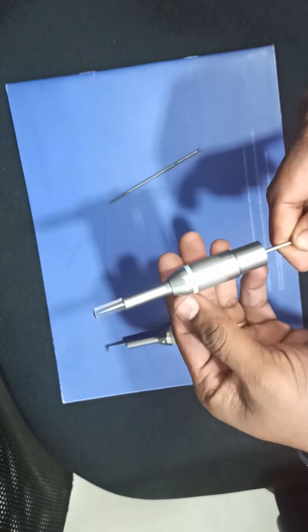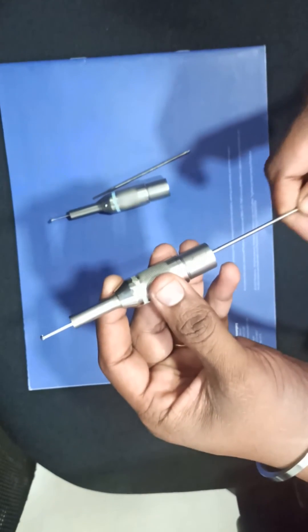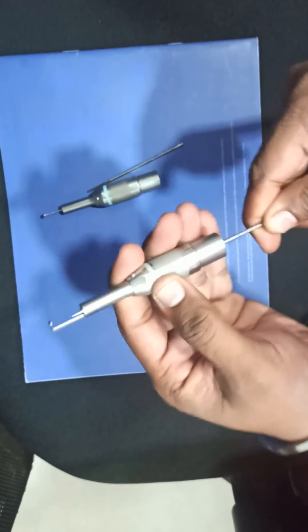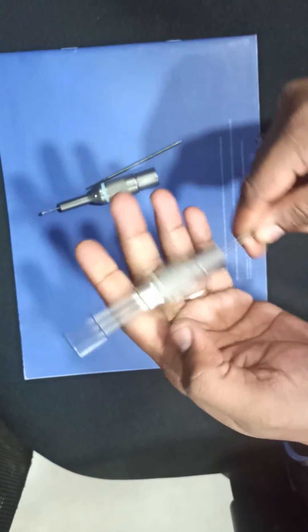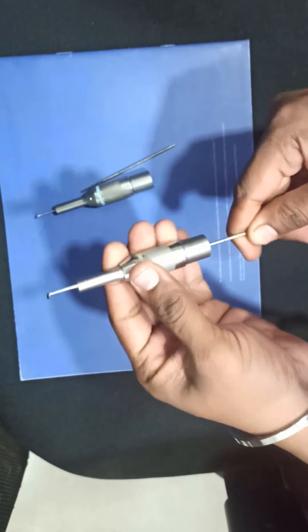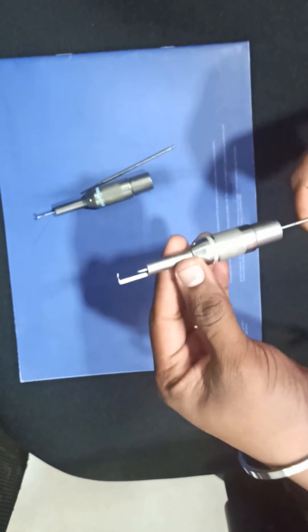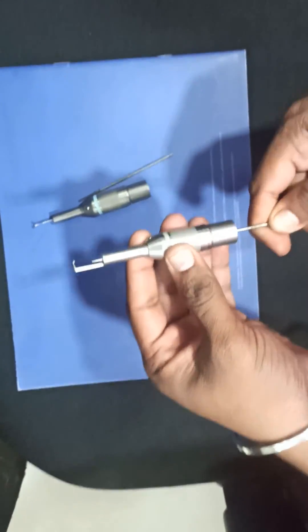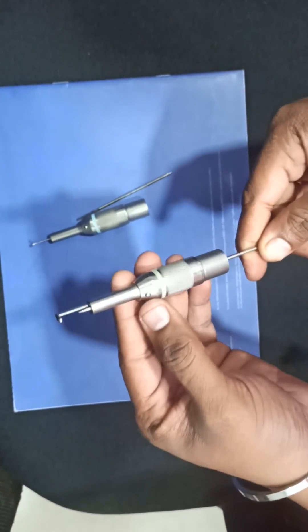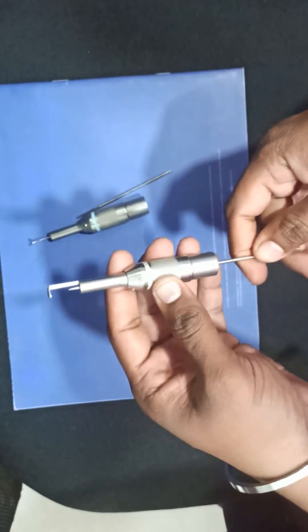If I insert it in this attachment now, see that it is going inside and it is getting stuck somewhere. So it shows that this attachment is defective. Like this you can easily identify the condition of the attachment and tools. Thank you.